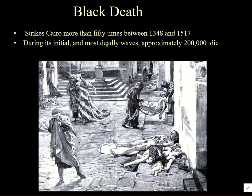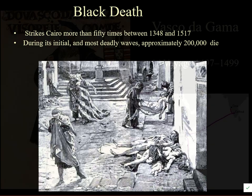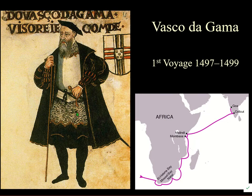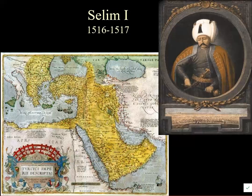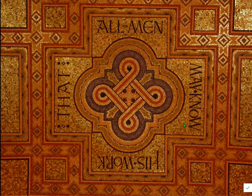The Mamluks carried on, but theirs was also the period of the Black Death — Cairo was struck 50 times during the Mamluk period. Then Vasco da Gama's sea route cut out the Middle Eastern middlemen, reducing Cairo's wealth. Finally, the Ottomans conquered the entire area, and that was it for the Mamluk Sultanate.